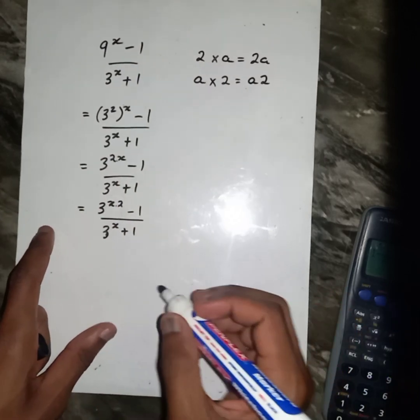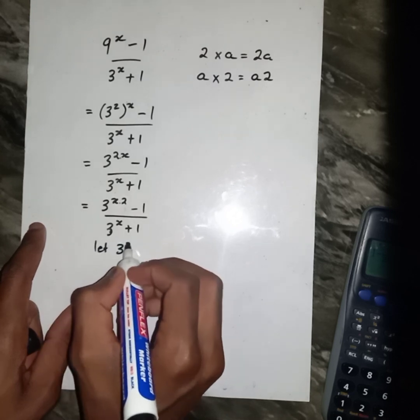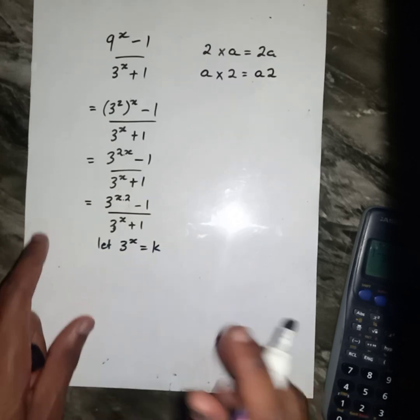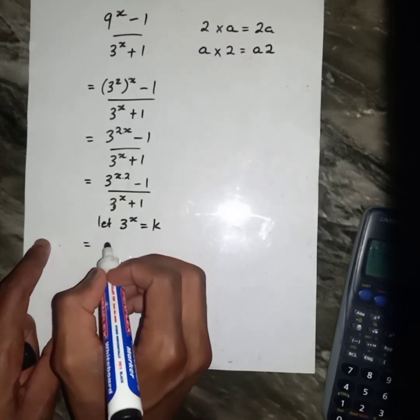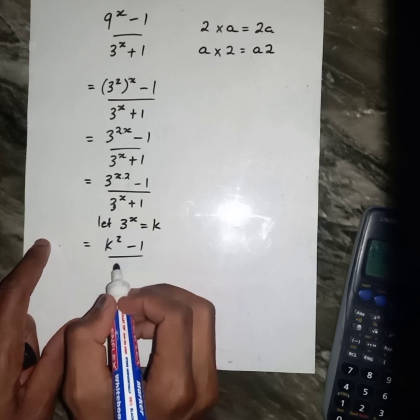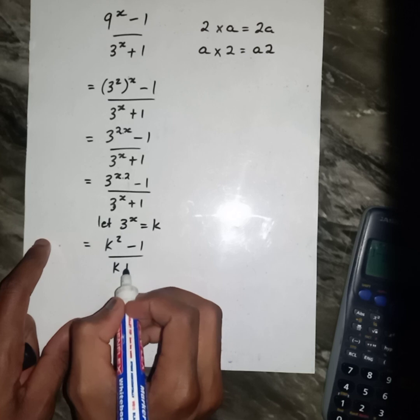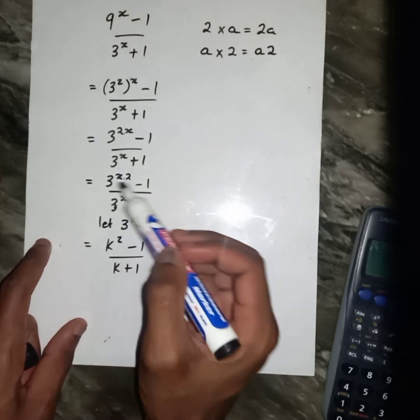Then at this point, I can then now say, let 3^x be k. Where I see 3^x, I replace with k. I have k squared minus 1. Then this side of k plus 1. I only replace this 3^x with k.